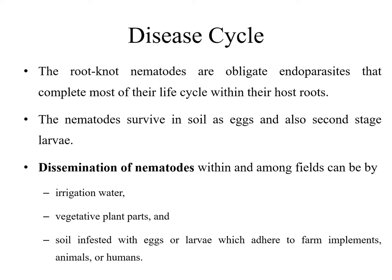Disease cycle: Root knot nematodes are obligate endoparasites that complete most of their life cycle within their host. Nematodes survive in soil as eggs and also as second-stage larvae, which is the infective larval stage and is almost similar to adult nematodes in structure. These nematodes are disseminated through irrigation water, vegetative plant parts, and soil infested with eggs or larvae which adhere to farm implements, animals, or humans.